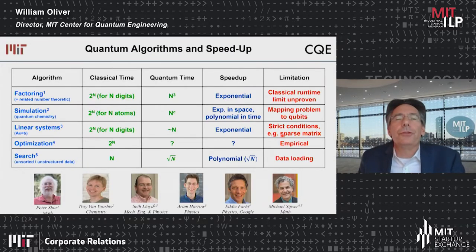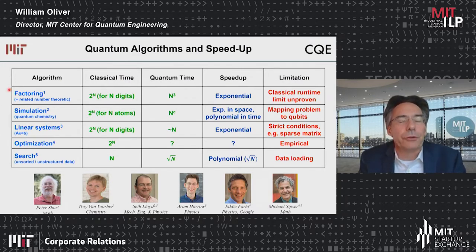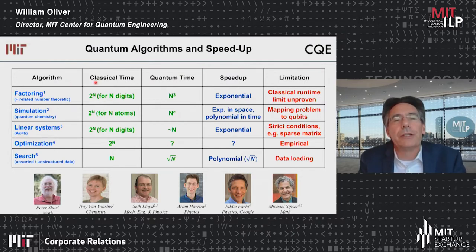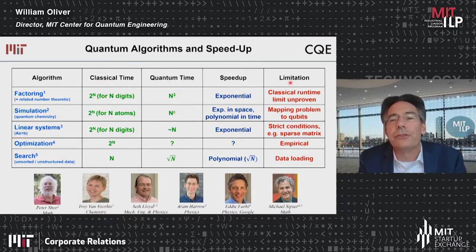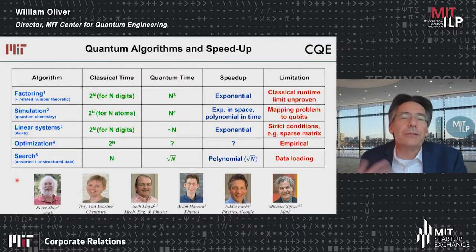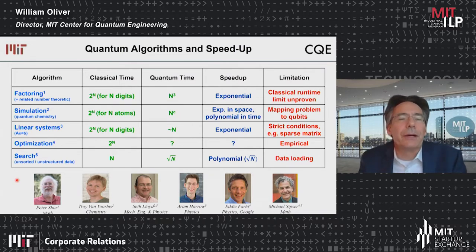We use these quantum computers to run algorithms, and I list here many of the algorithm categories that we know of today. We have the classical time that would take a classical computer, the quantum time on a quantum computer at scale, the speedup, and limitations related to research today. Many of these algorithms were either developed or advanced by MIT faculty.